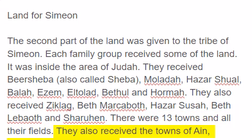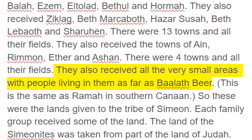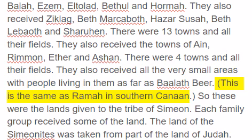They also received the towns of Ain, Rumen, Ether, and Ishan. There were four towns and all their fields. They also received all the very small areas with people living in them as far as Baalath-bir. This is the same as Ramah in southern Canaan.